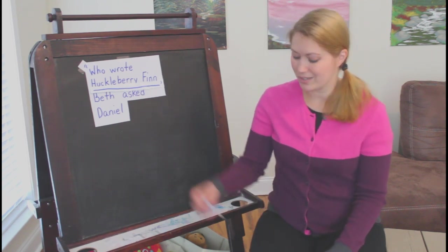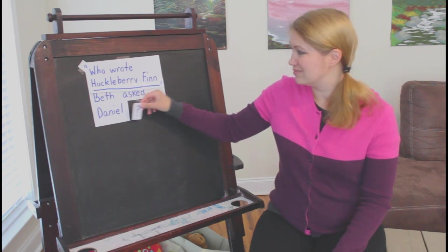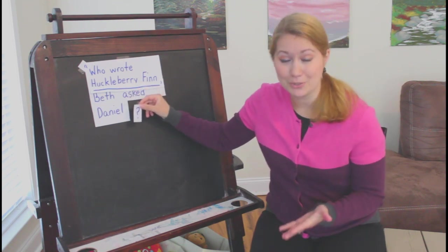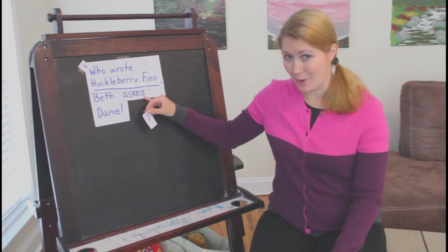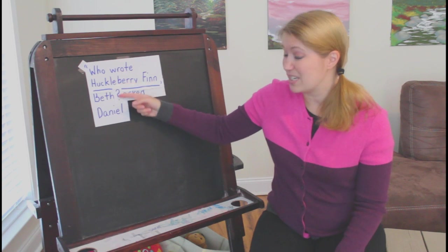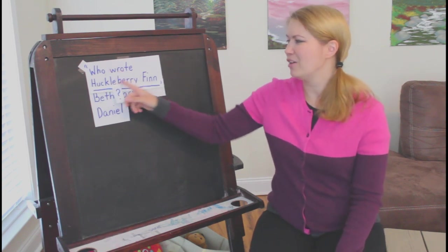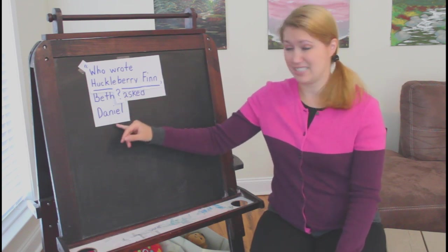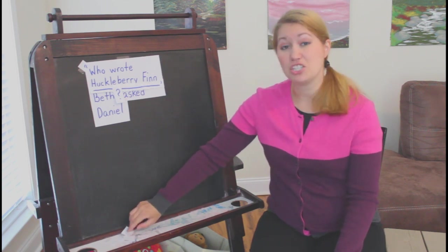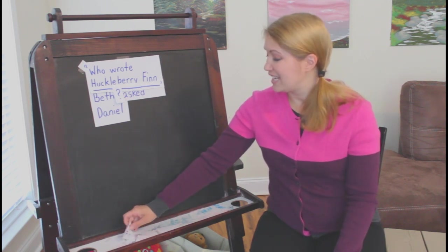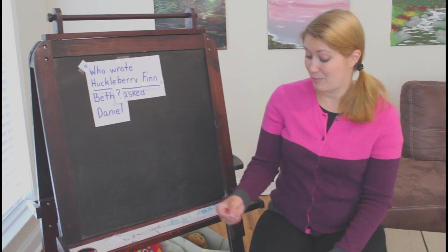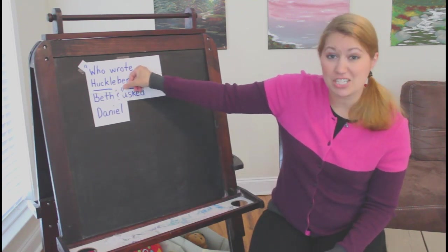A question mark. Do I put it down here? Where do I put it? Daniel's not part of a question. Where did Daniel stop talking? Did he say asked? No. Did he say Beth? Yes. So this is where he stopped talking — this is where I'm going to put my question mark. Who wrote Huckleberry Finn? Beth asked Daniel. So he stopped talking here, and I'm going to put something there to show that. What do we put at the end of a direct quote so we know someone stopped talking? We put the other side of our quotation marks.